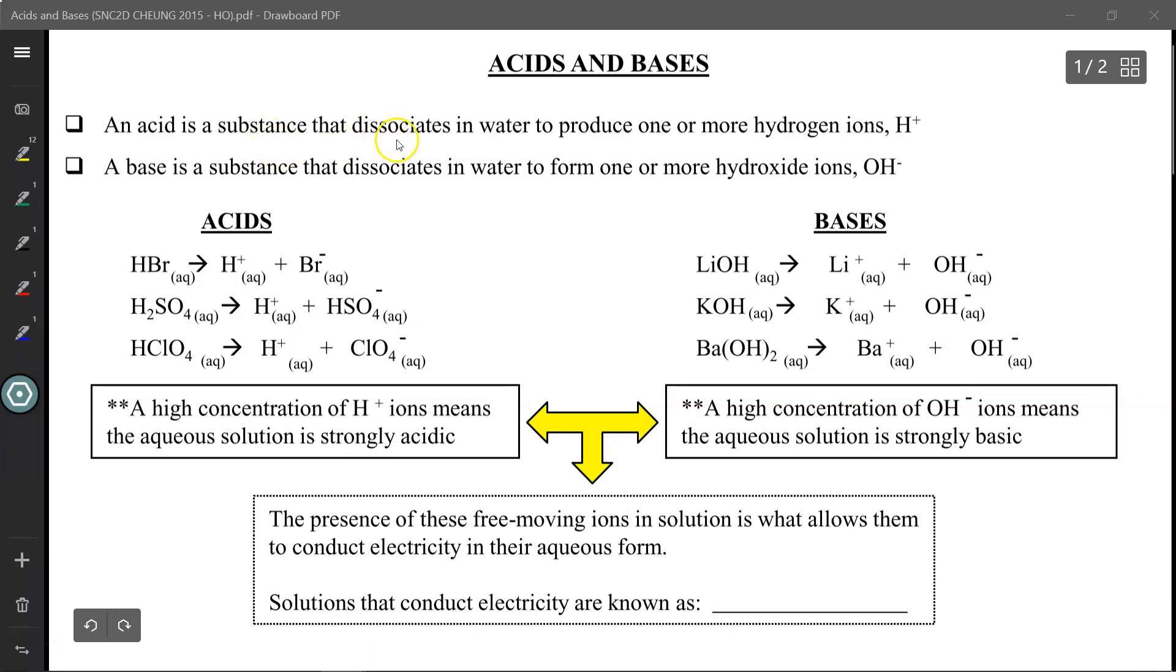An acid is a substance that dissociates in water, meaning when it dissolves it breaks up, producing one or more hydrogen ions (H+), which has lost an electron. On the other hand, a base is a substance that dissociates in water, dissolving and breaking up to form one or more hydroxide ions (OH-).